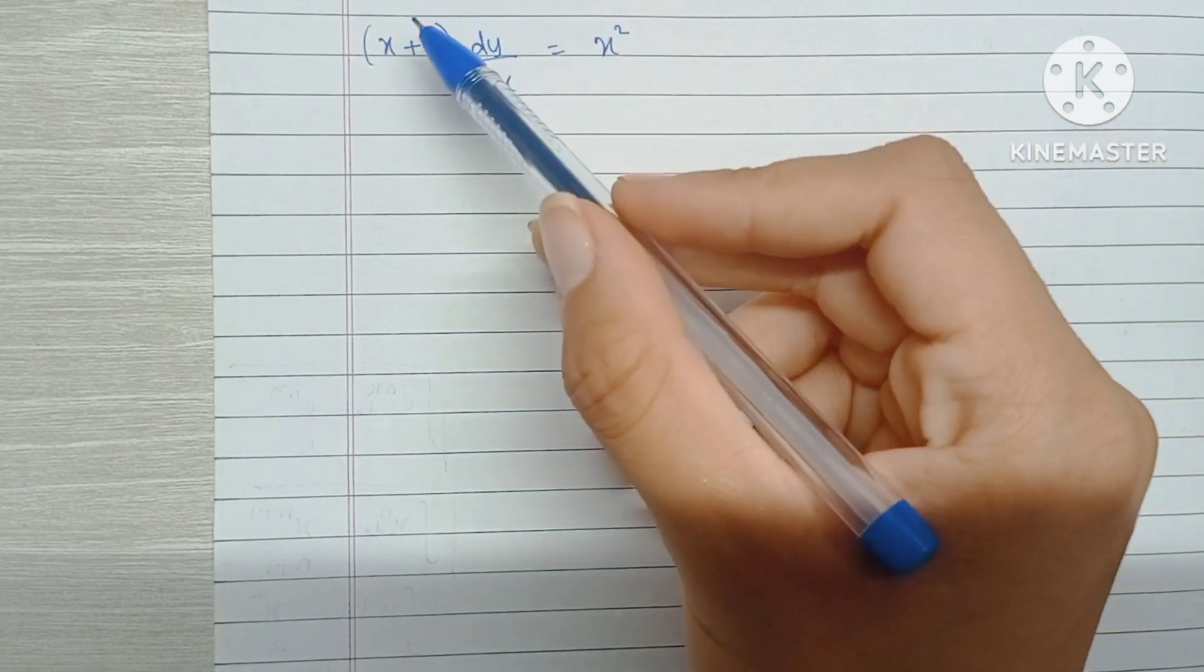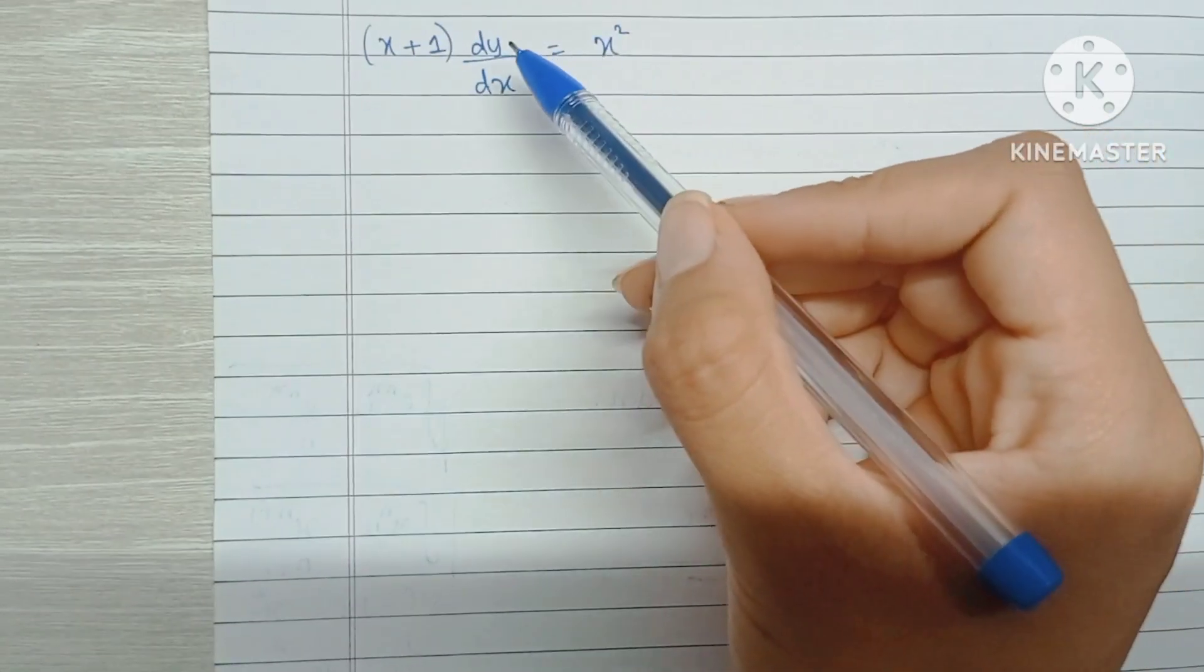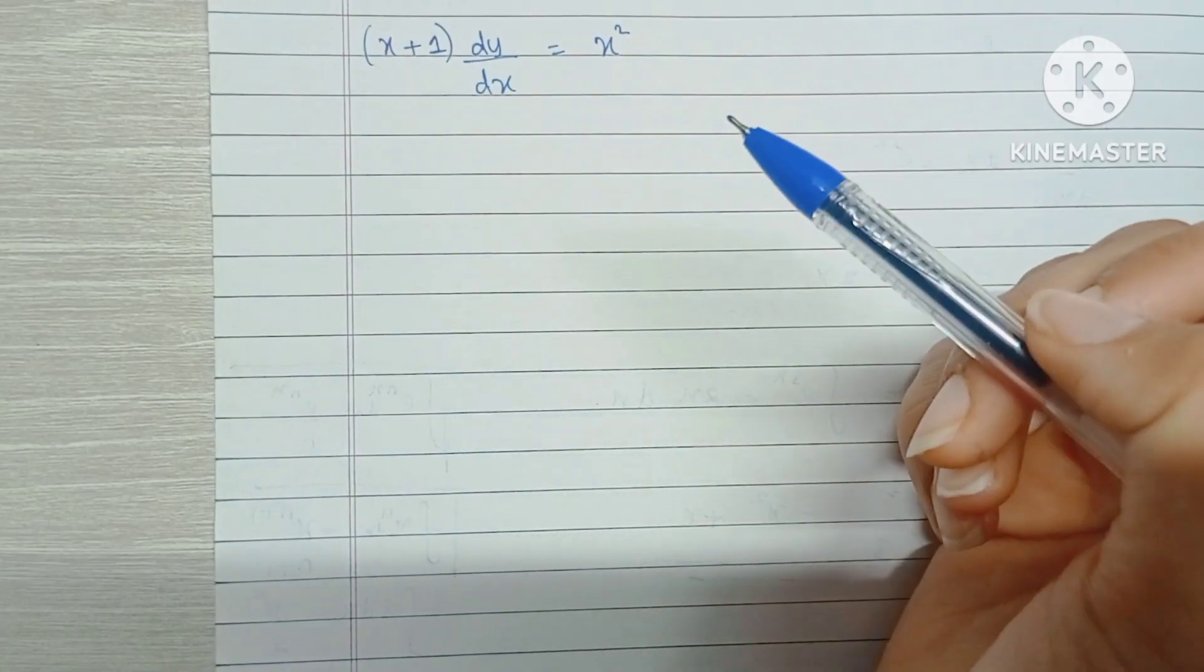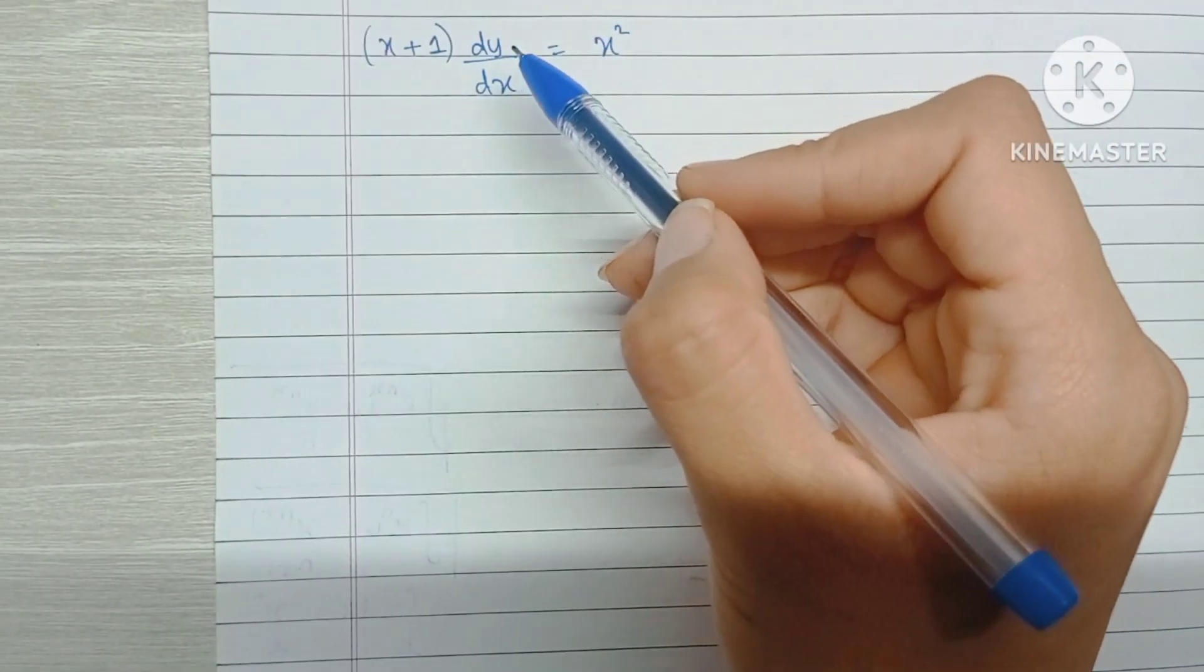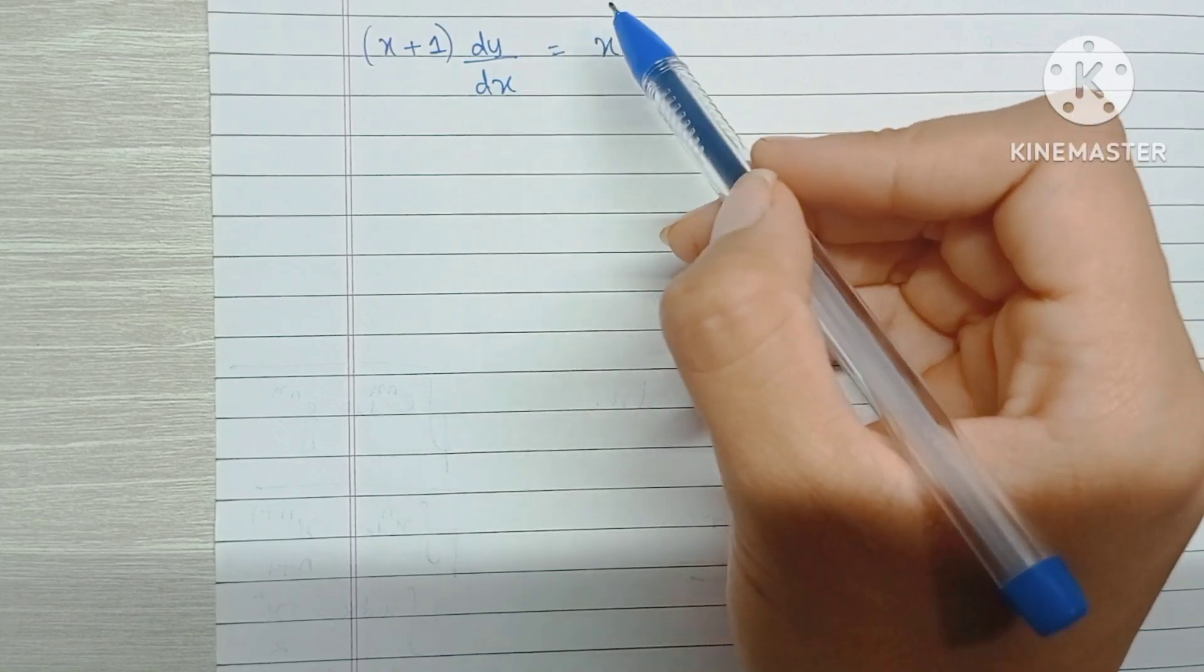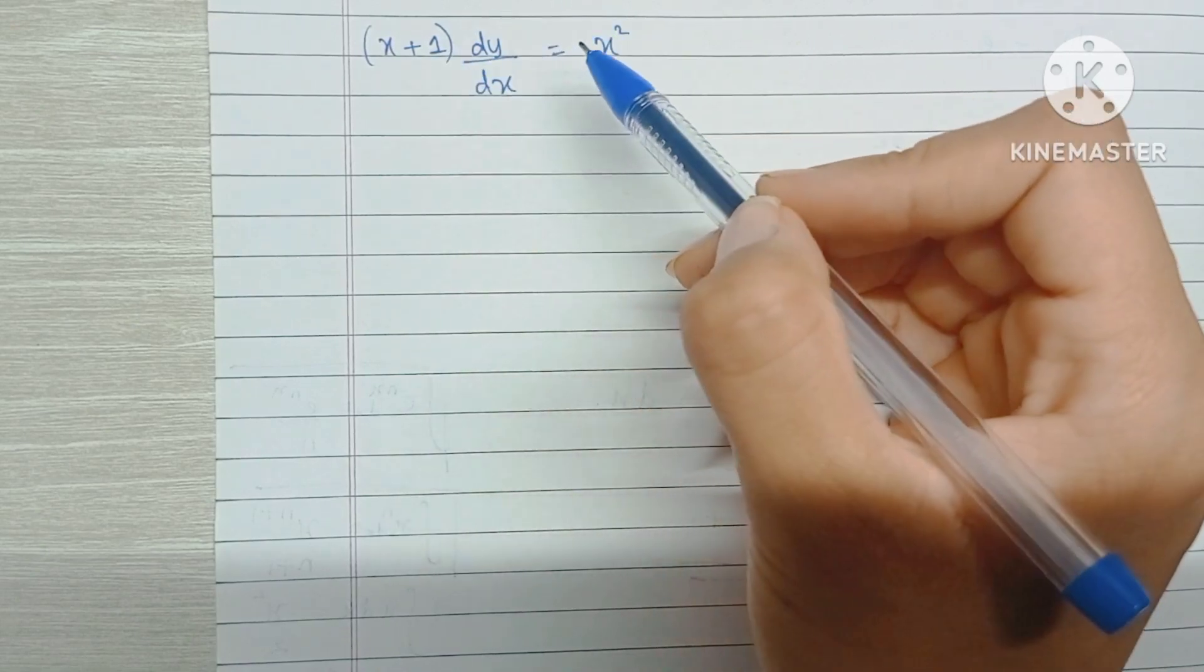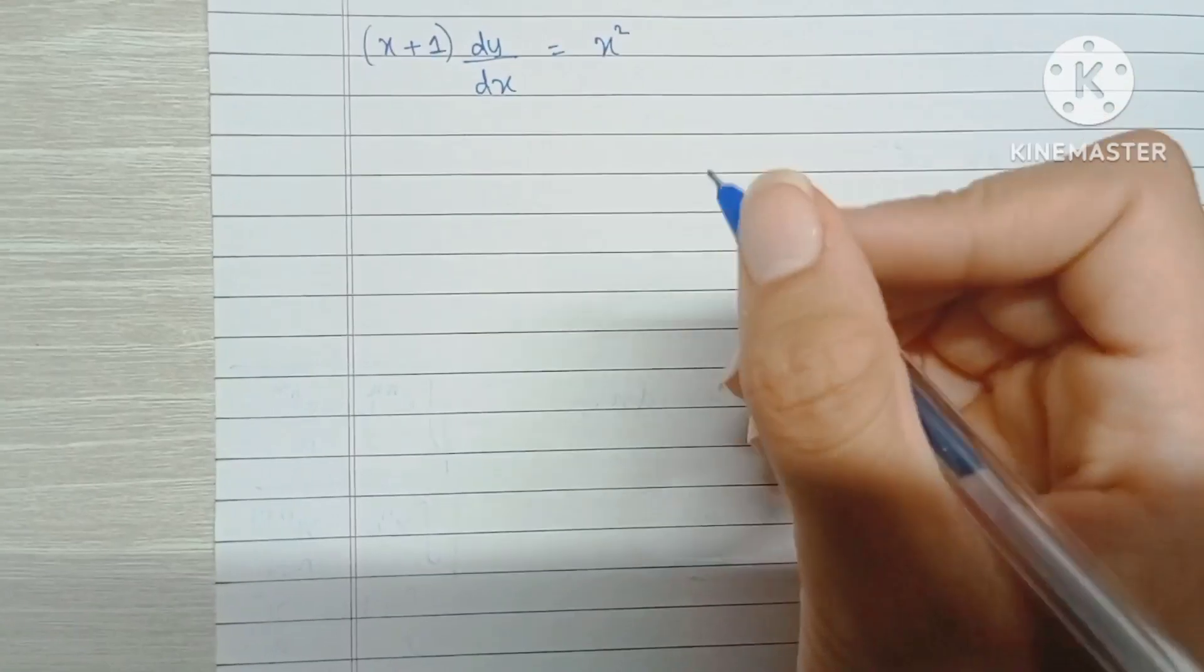So the aim of solving this equation is that we don't want any differential term in the equation, which means that we're going to be bringing dy by dx back into terms of y. The equation will come back into the terms of y. So let's begin.